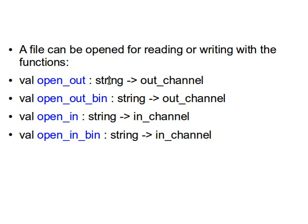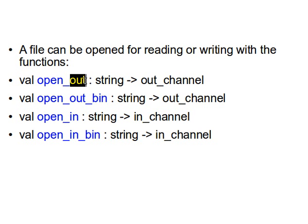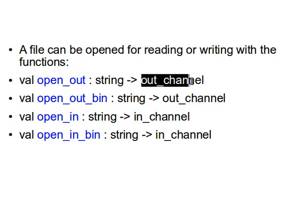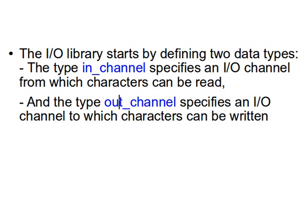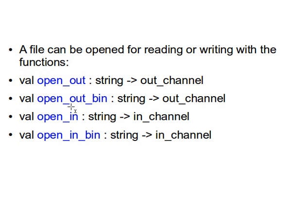The function open_out opens a file for writing. It takes a string - the fully qualified file name - as a parameter and returns an out_channel, which we can use to write to the file.